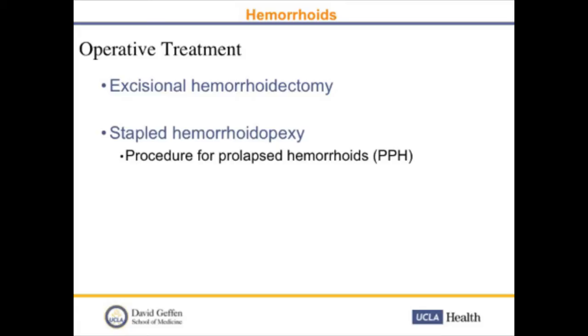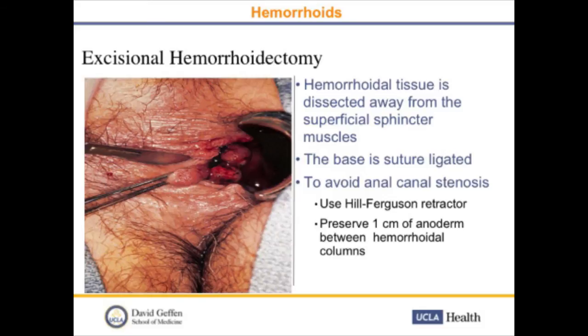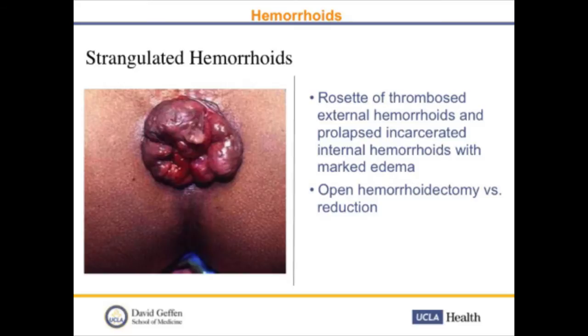For excisional hemorrhoidectomy — whether for external hemorrhoids, internal hemorrhoids, or the procedure for prolapsed hemorrhoids — the tissue is dissected away from the sphincter muscles, the base is suture ligated, and we usually want to preserve a one centimeter area of anal derm between the hemorrhoidal columns to avoid anal canal stenosis. For strangulated hemorrhoids, open hemorrhoidectomy could be performed, but if they can be reduced, we can defer hemorrhoidectomy, as the hemorrhoid is so inflamed that removal requires a lot of tissue, and stricturing can occur. Pain is usually universal; I tell patients they may have pain for five to seven days, so most want to try conservative therapy first.